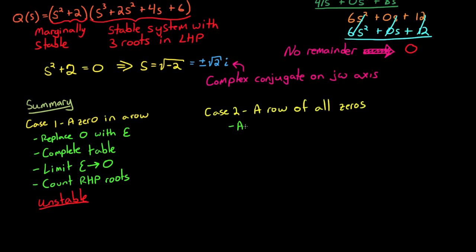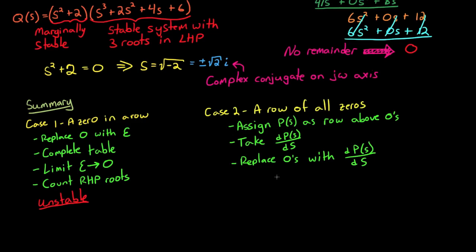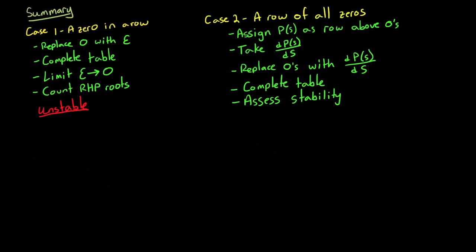In the second case, where we had a row of all zeros, we assigned the row above it as the auxiliary polynomial p. Then we took the derivative of p with respect to s, and we replaced the all-zero row with that derivative. Then we just completed the table as usual, and then just assessed the stability of the system, either unstable or marginally stable.